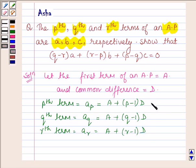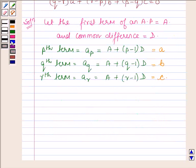Now we are given that the pth term is a, qth term is b and rth term is c. So let us now take the left hand side of what we have to prove, that is